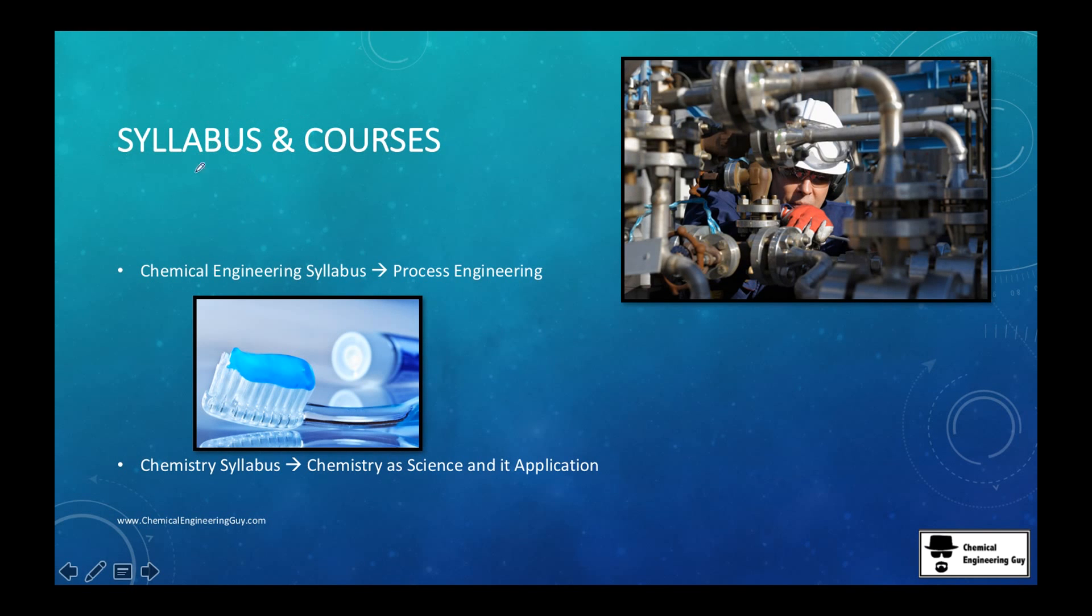In this case, I will show you just very basic stuff we cover in the courses. Chemical engineering is more into process engineering, which means how to create processes to manufacture chemical products, and the chemistry syllabus is more about chemistry as a science and its applications.